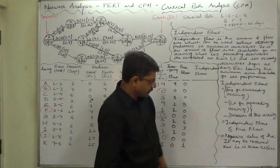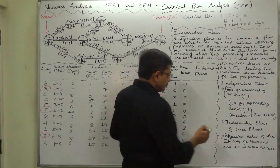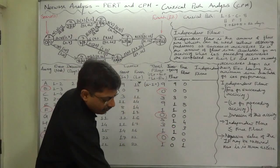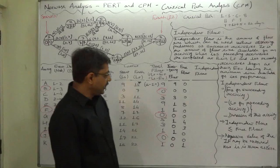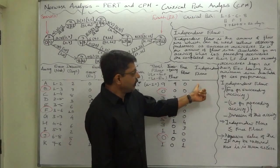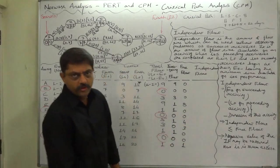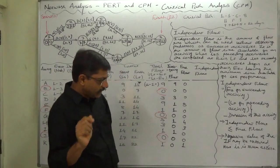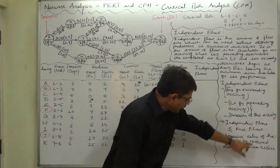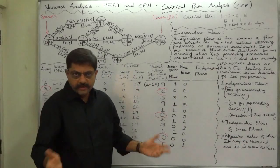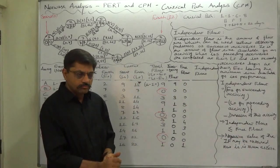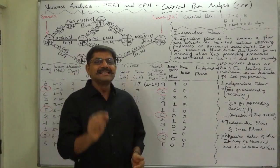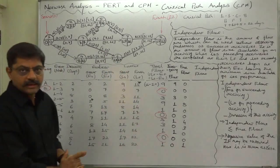Independent float is always less than or equal to free float — it can never exceed the free float. If you calculate independent float and it comes to an amount greater than free float, then it is an error and we have to check. A negative value of independent float may be obtained mathematically, but it is taken as 0.